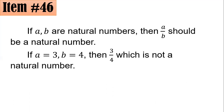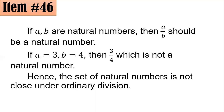However, if A is 3 and B is 4, then A over B is 3/4, which simplifies to 0.75 — not a natural number. Hence, there exist elements in the set of natural numbers that, when divided, produce a result outside the set. Therefore, the set of natural numbers is not closed under ordinary division. Letter A.